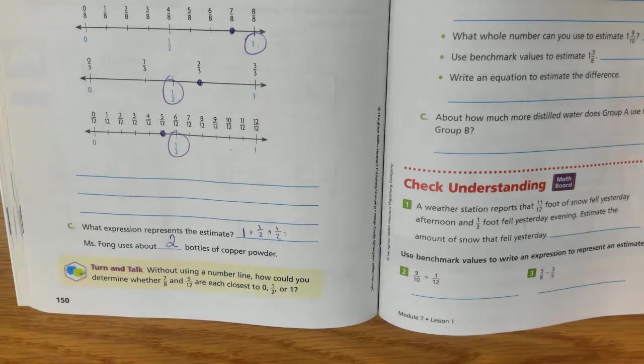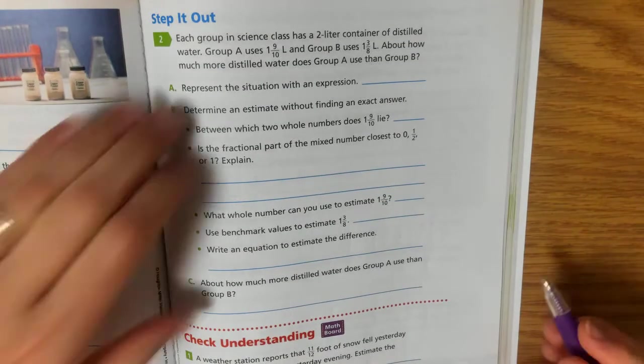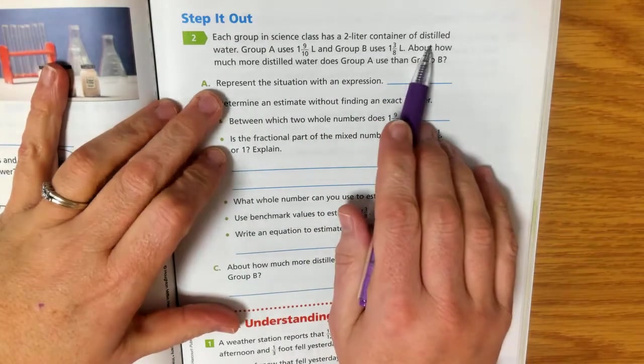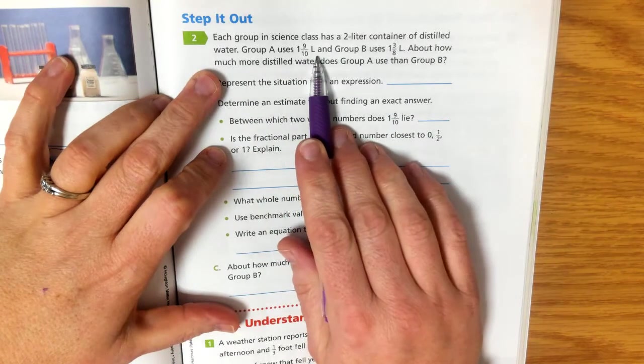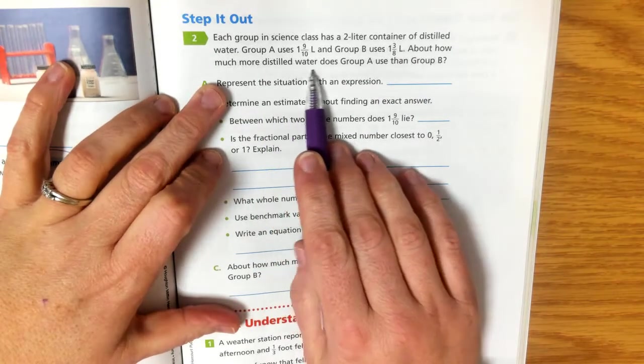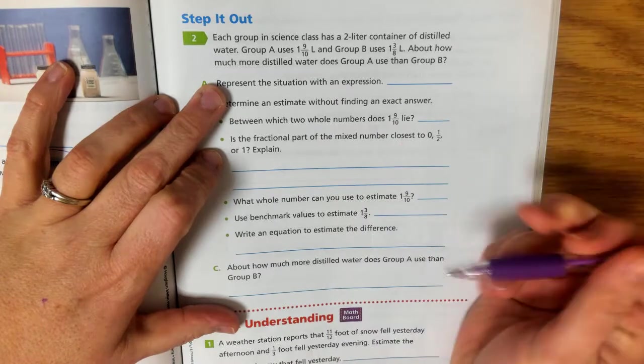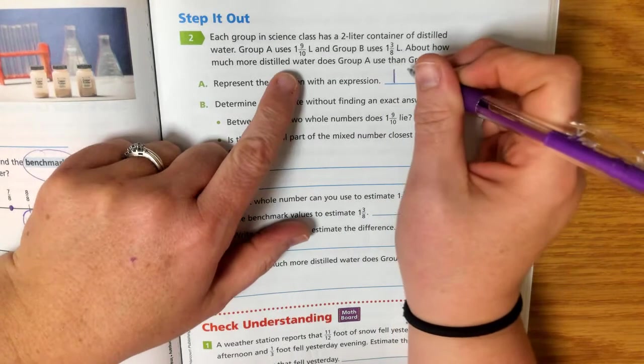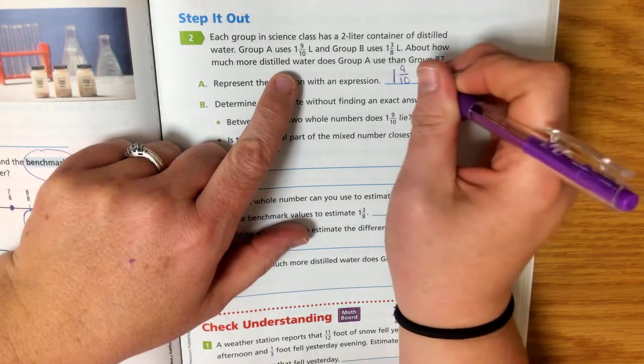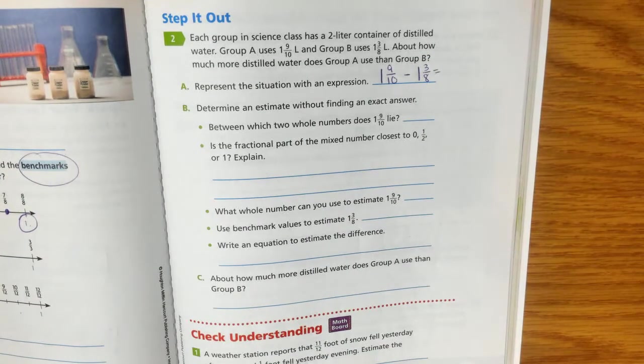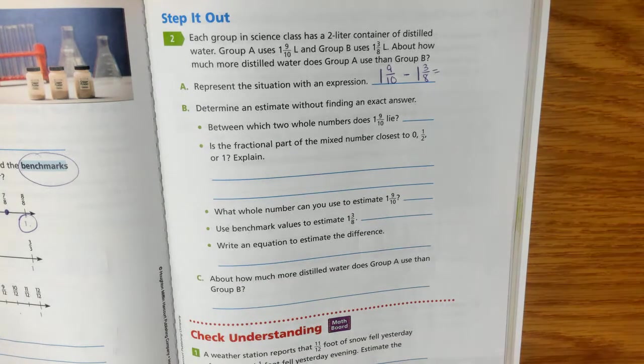Now we don't have, that's not the exact amount, but we want to just know about. We want to have an estimate. Each group in science class has a 2 liter container of distilled water. Group A uses 1 and 9 tenths liters, and group B uses 1 and 3 eighths liters. About how much more distilled water does group A use than B? About how much more? So this is not an addition. This would be a subtraction problem. So this would be 1 and 9 tenths minus 1 and 3 eighths. Again, our denominators are not the same, but we can try and figure this out.